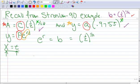Well, I know my b in this case is .9755 because I already calculated that in a previous example. And that equals e to the r. And we're solving for r because r is our variable here.